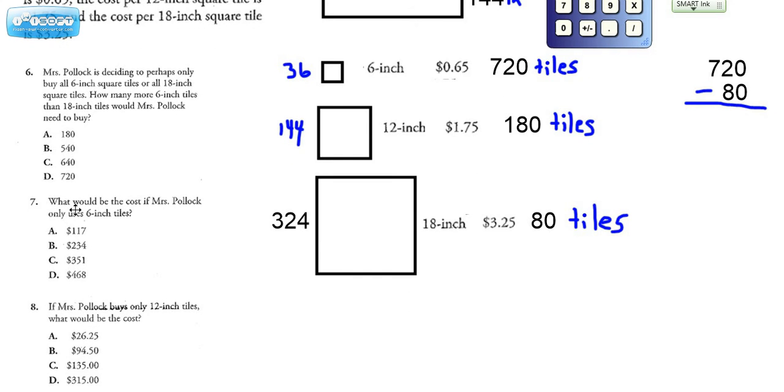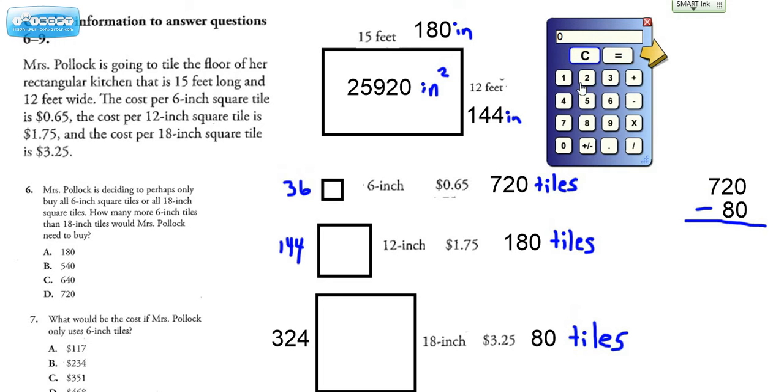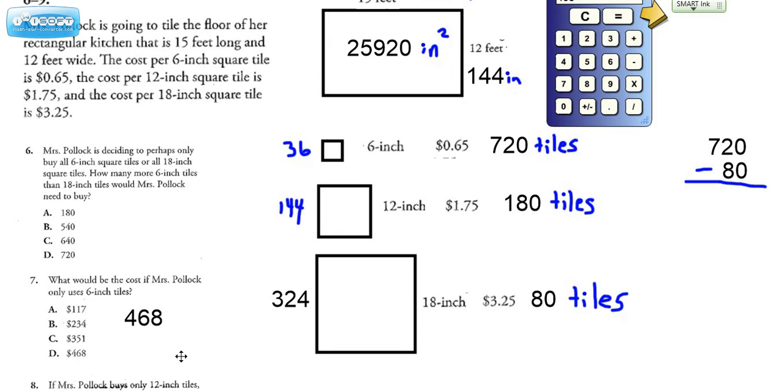What would be the cost if Mrs. Pollack only uses six inch tiles? So we were saying that if you need 720 of them, you have to multiply 720 times the cost, which is 65 cents, and we get this figure. Now, does that match any of the values here? It does, right? It matches choice D.